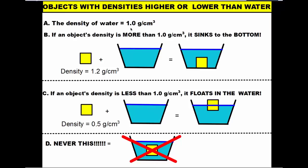If an object's density is more than the surrounding environment, it sinks. So if an object's density is greater than 1.0 grams per cubic centimeter — the density of water — it sinks to the bottom. For example, a block with a density of 1.2 grams per cubic centimeter placed in water would sink completely to the bottom. As long as the object's density is greater than 1.0, it sinks.